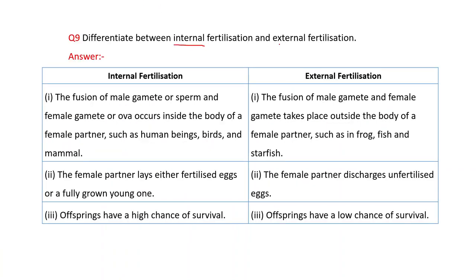Differentiate between internal fertilization and external fertilization. In internal fertilization, the fusion of male gametes (sperm) and female gametes (ovum) occurs inside the body of the female partner — such as in human beings, birds, and mammals. In external fertilization, the fusion of male and female gametes takes place outside the body of the female partner — such as in frogs, fish, and starfish.